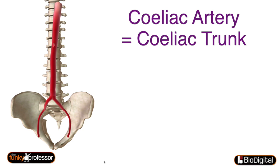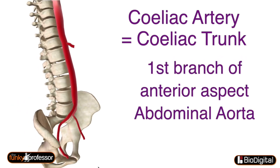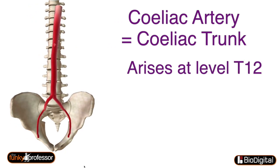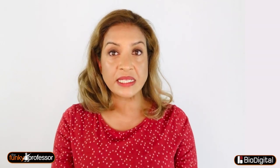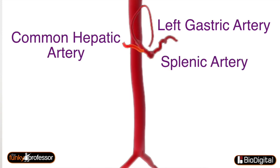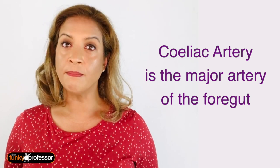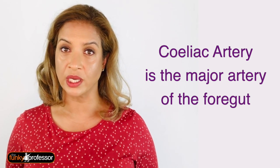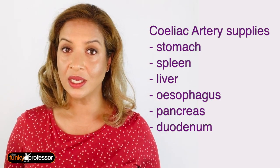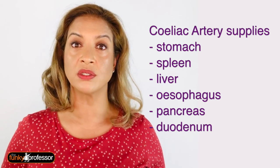The answer to question one: the celiac artery, also known as the celiac trunk, is the first branch from the anterior aspect of the abdominal aorta. It arises at the vertebral level of T12 and almost immediately divides into its three terminal branches: the left gastric artery, the splenic artery, and the common hepatic artery. The celiac artery is the major artery that supplies the foregut, and these three branches go on to supply the stomach, spleen, liver, esophagus, and also parts of the pancreas and duodenum.